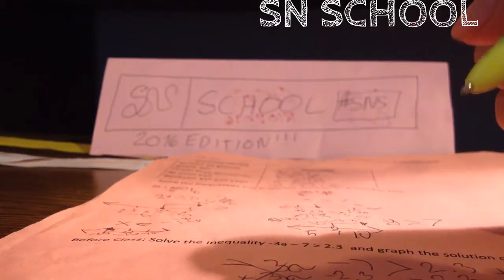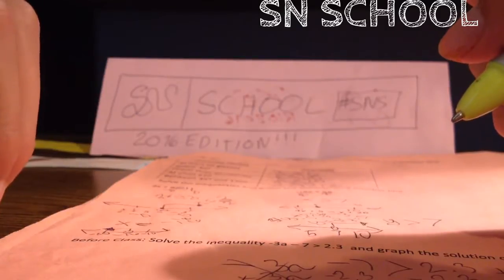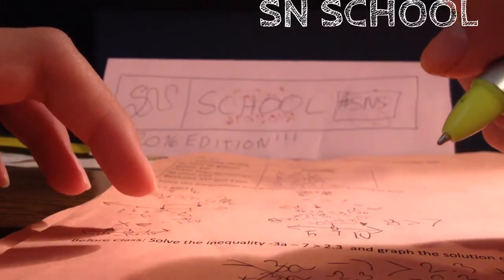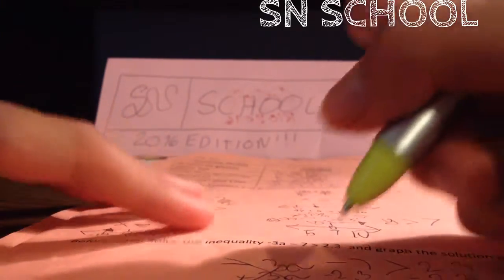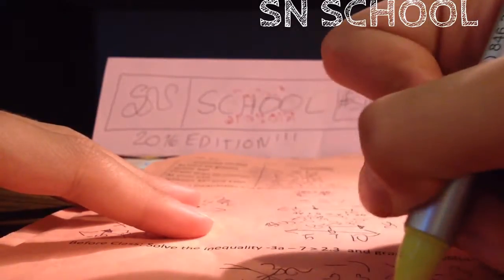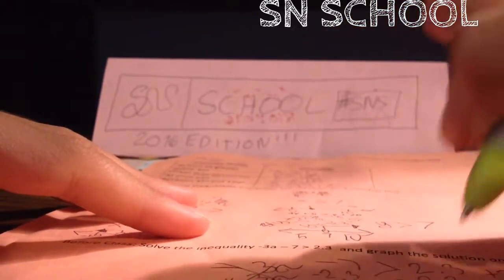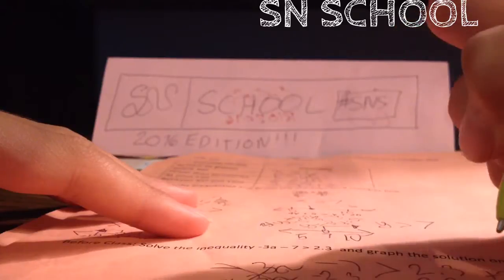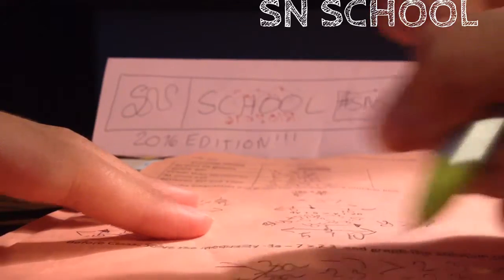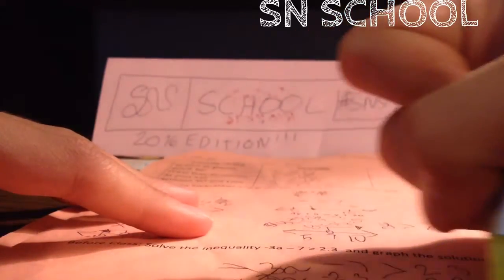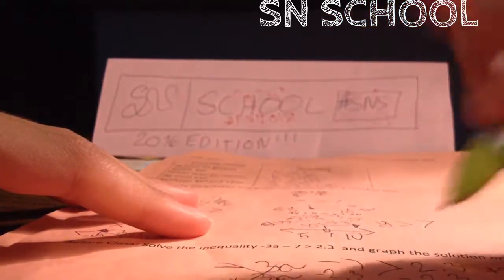After this you're going to get pretty messy. 9.3 greater than 3a. Then you divide by 3, and then you get